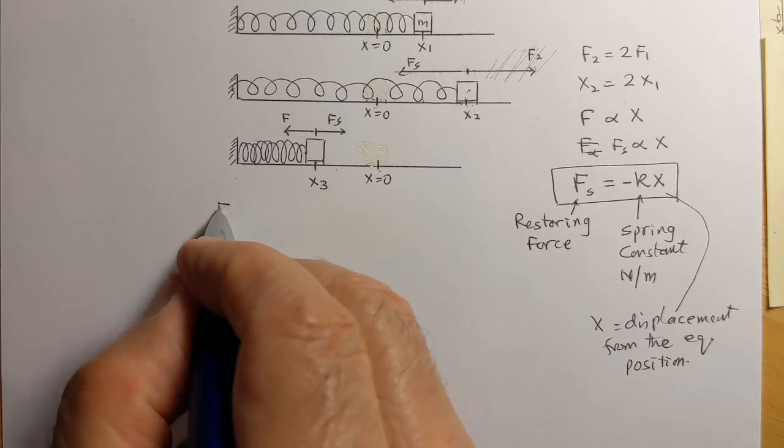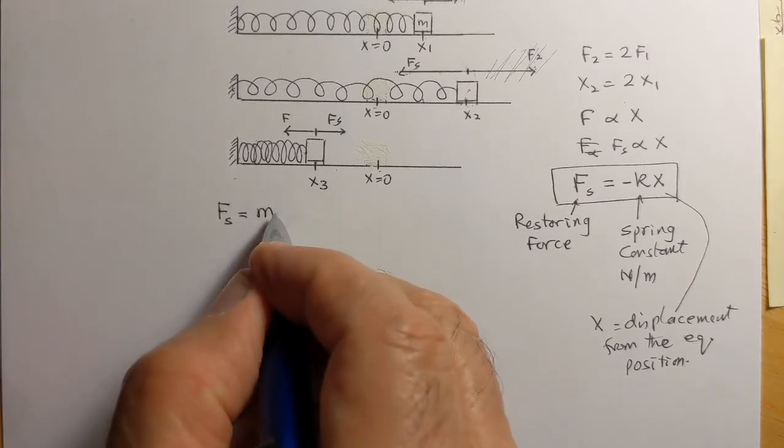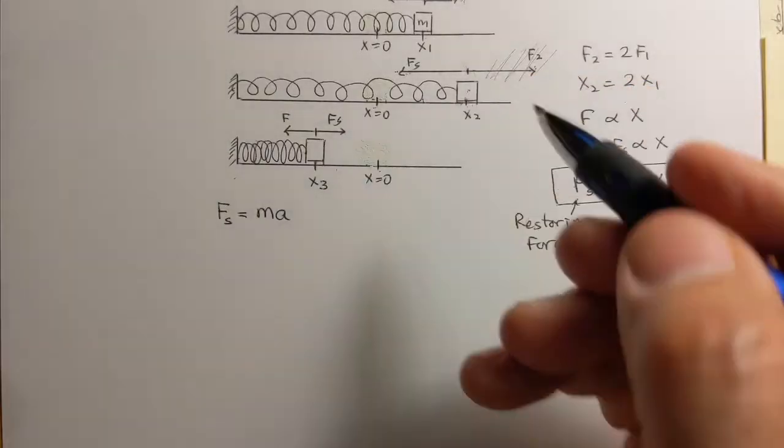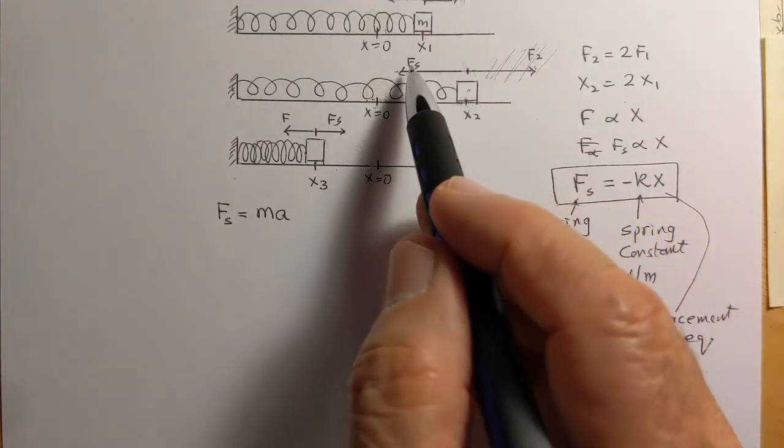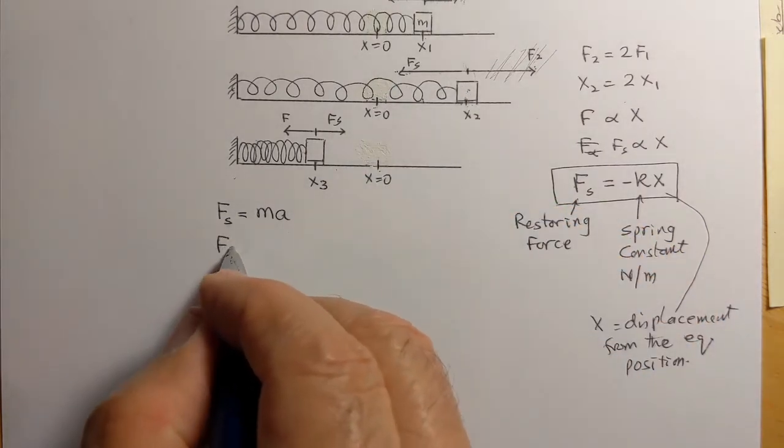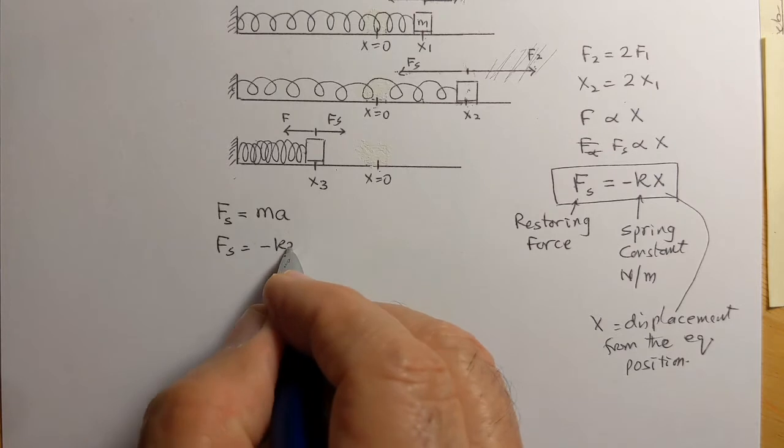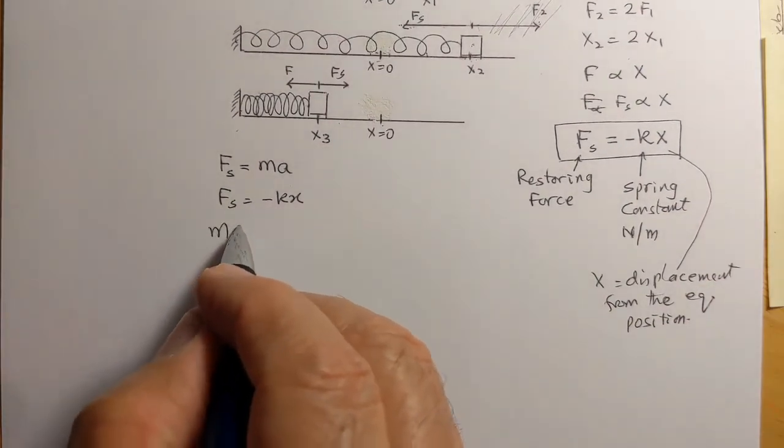F_s will create an acceleration to the left, and the force will equal ma. We have F_s equals -kx from Hooke's law, and therefore we can say that ma